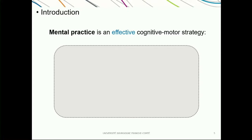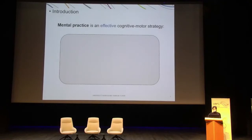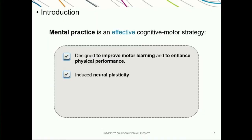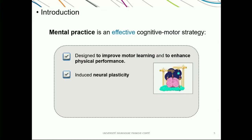Mental practice has received a great deal of attention in the last 50 years within cognitive sports psychology, and it is now well established that mental practice with motor imagery is an effective cognitive motor strategy. Mental practice can improve motor learning and enhance physical performance. This behavioral improvement relies on neural plasticity induction. Neuroplasticity refers to the capacity of the nervous system to modify itself functionally and structurally in response to experience, such as mental practice, or in response to injury.